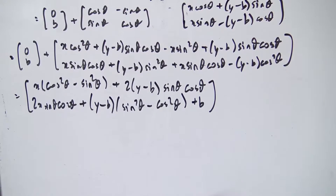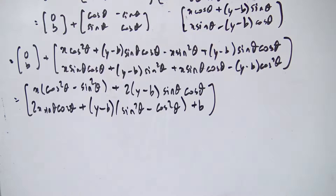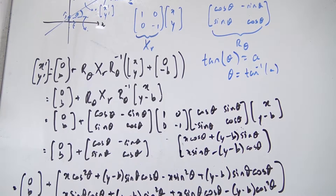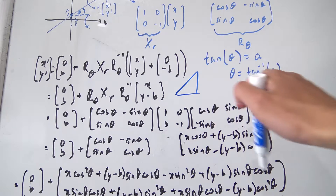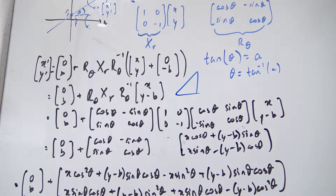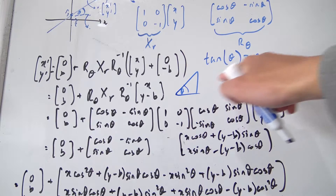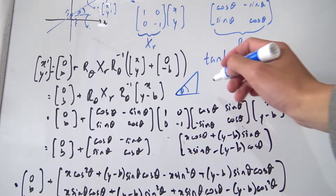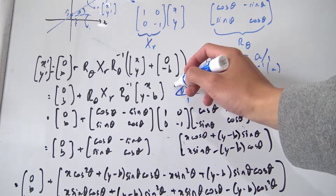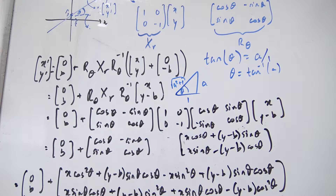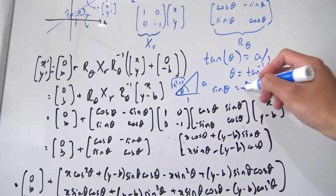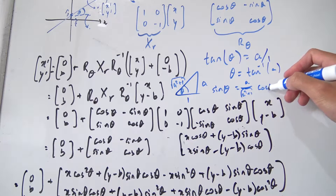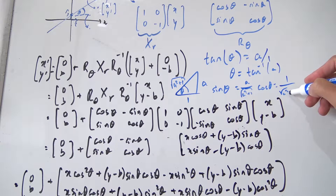In our equations we have sine theta and cosine theta, not theta by itself. So we need to express sine theta and cosine theta in terms of a. Drawing a right triangle: since tan theta equals a, and tan is opposite over adjacent, we can set the opposite side to a and the adjacent side to 1. By the Pythagorean theorem, the hypotenuse is the square root of (a squared plus 1). Therefore, sine theta equals a over root(a² + 1), and cosine theta equals 1 over root(a² + 1).